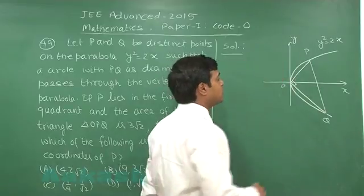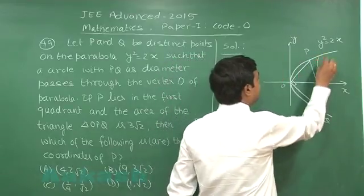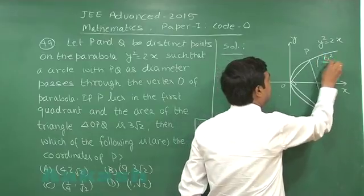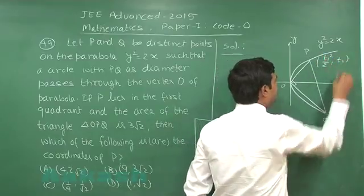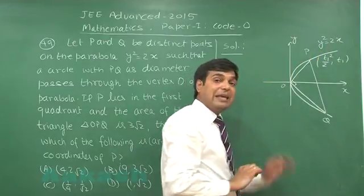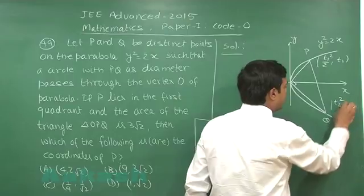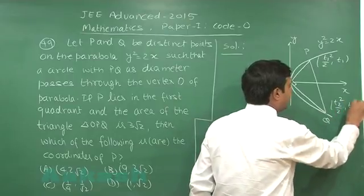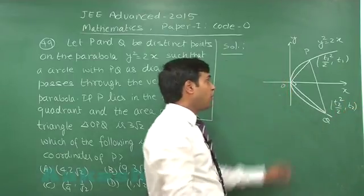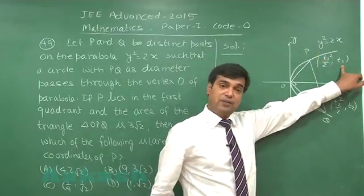For this parabola y square equals 2x, we can take general points t1 square by 2, t1 as 4a equals 2 giving me a equals half. Point Q as t2 square by 2, t2. It is given point P is in the first quadrant, so t1 is positive.